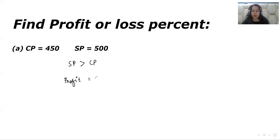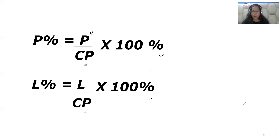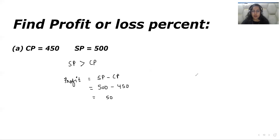So first we need to calculate the profit. We calculate it using the formula: selling price minus cost price. Selling price is 500 and cost price is 450, so we have a profit of Rs. 50. Now we are going to apply the formula of profit percent, which is: profit over CP into 100.